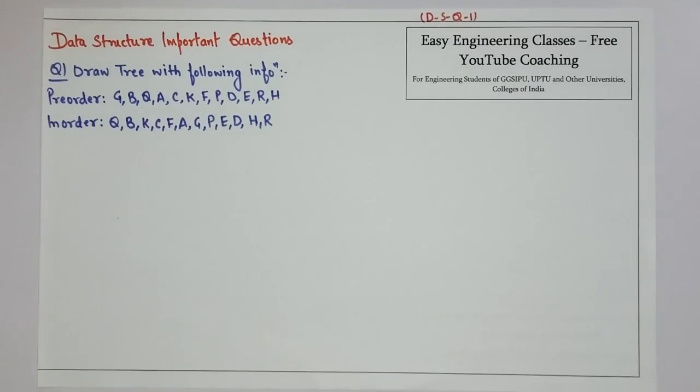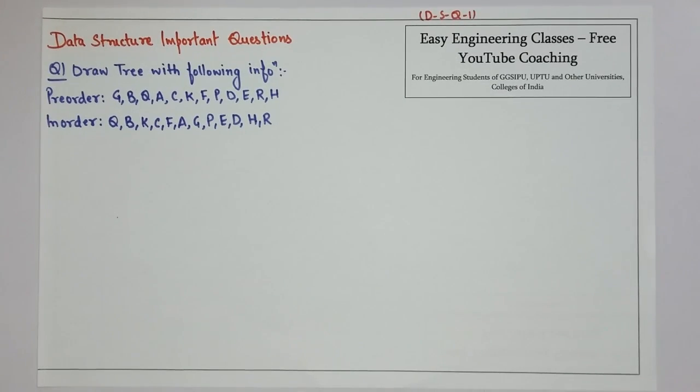Hello everyone. This is a data structure question where pre-order and in-order traversals are given and we have to draw a tree from this information. Let's start with the solution.